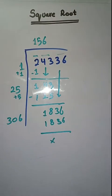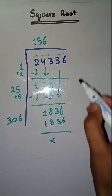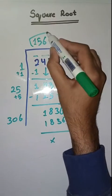So, this is completely solved. So, square root of 24,336 is 156.